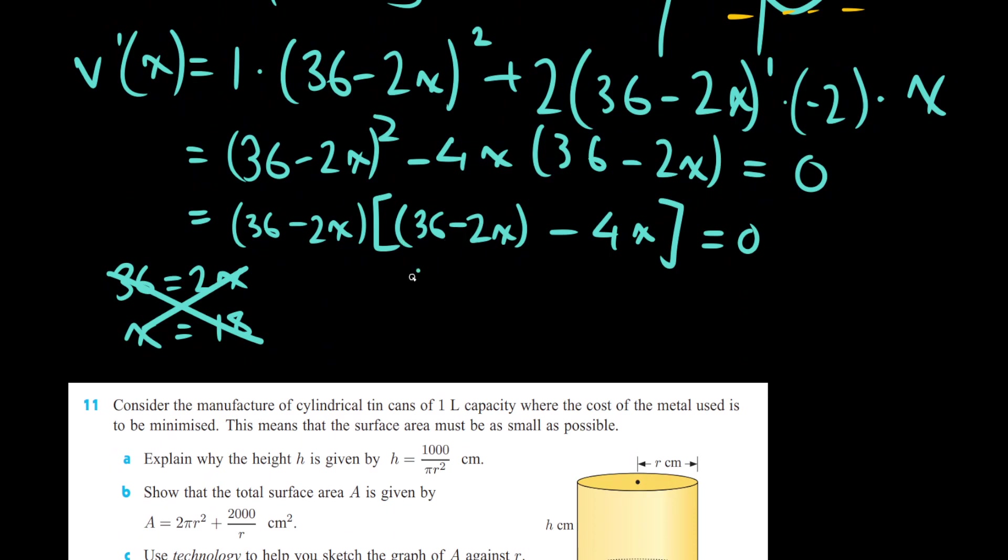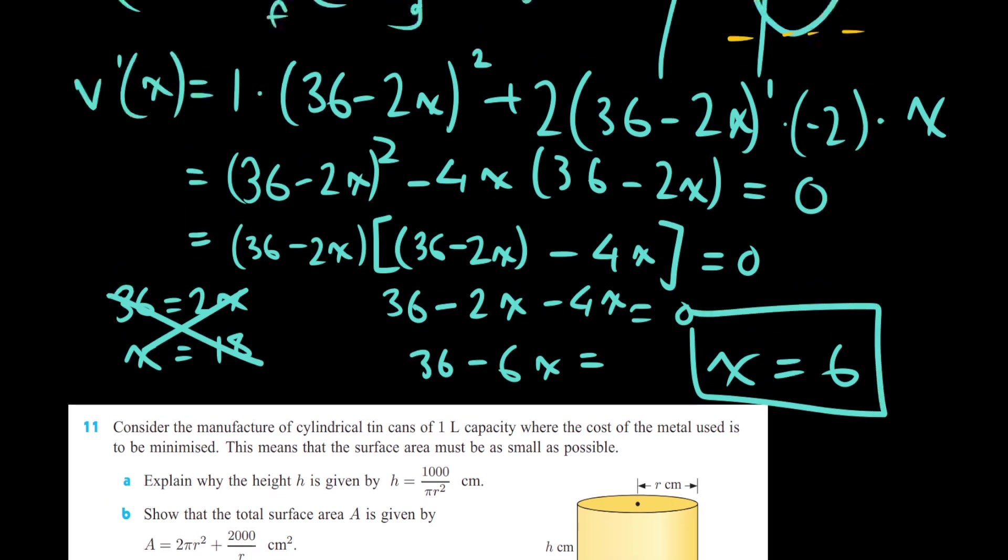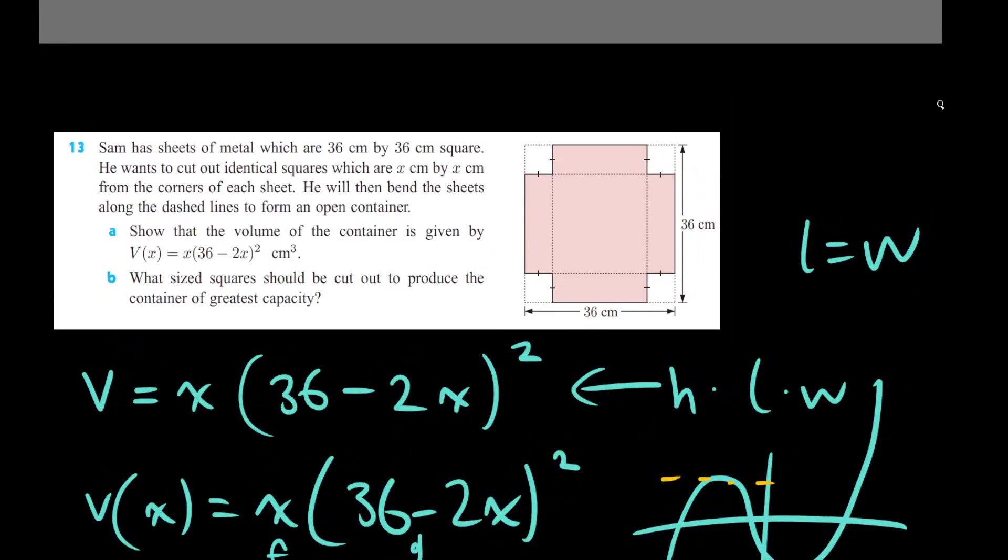Let's expand this out, 36 minus 6x equals zero. This would tell us that x is equal to 6, and this happens to be the solution that gives us the maximum volume for this question.